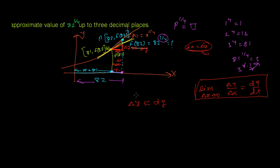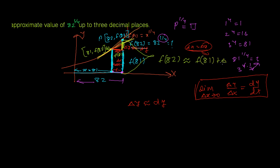That's why we say Δy ≈ dy, as discussed in the previous video. Now it's easy to find f(82). f(81) gives one coordinate, and our complete f(82) is f(81) plus the gap Δy, which is approximately equal to dy. So f(82) ≈ f(81) + Δy.